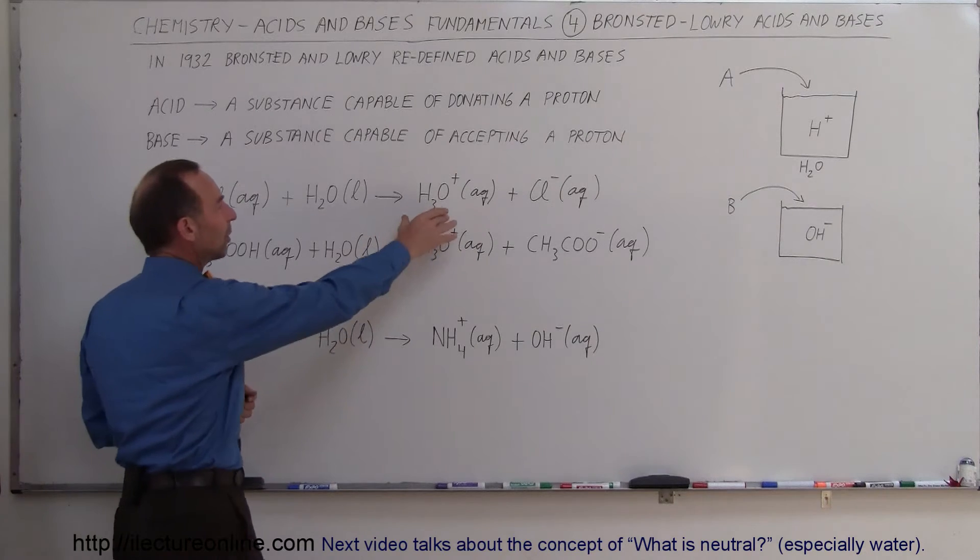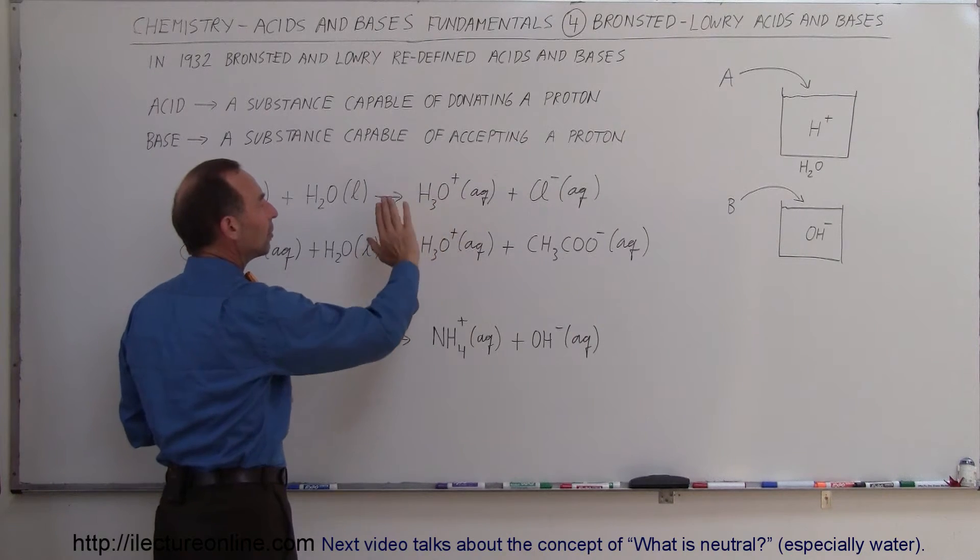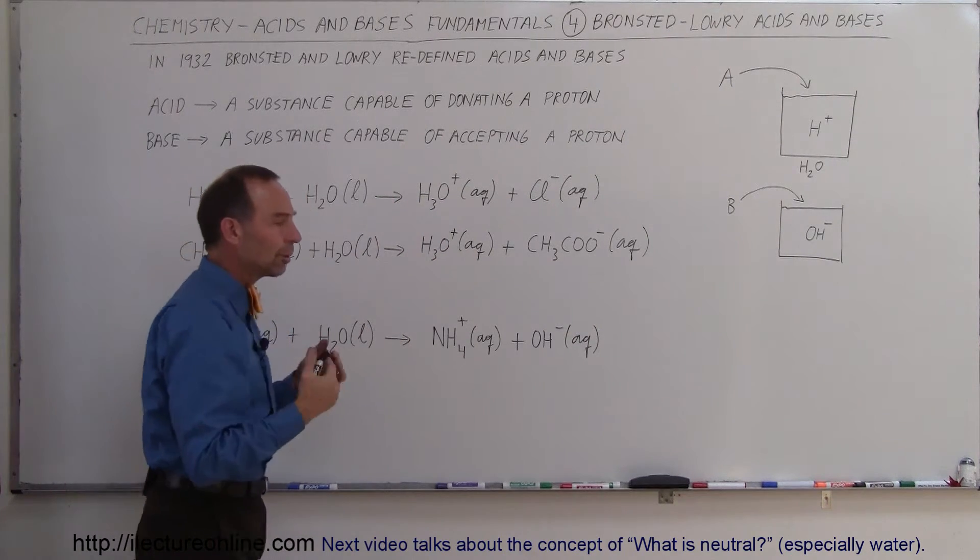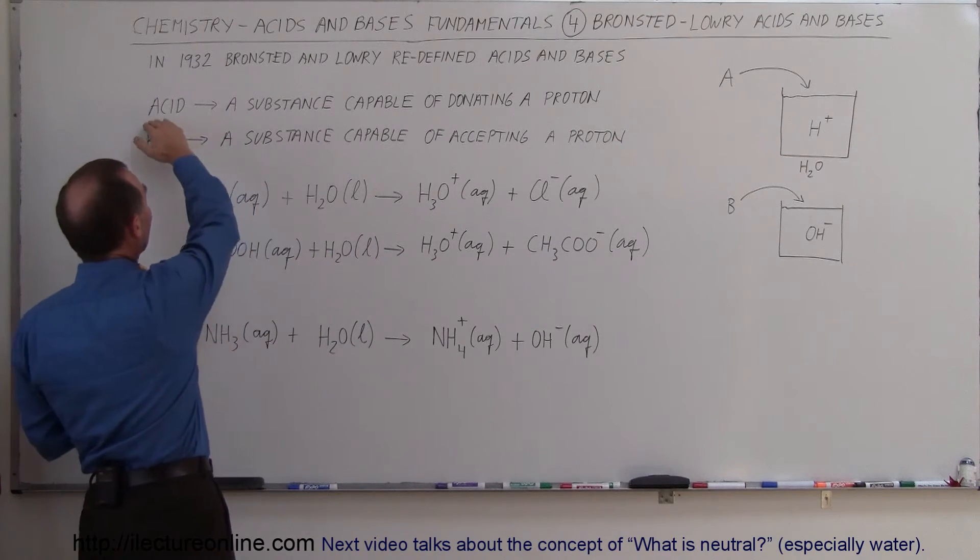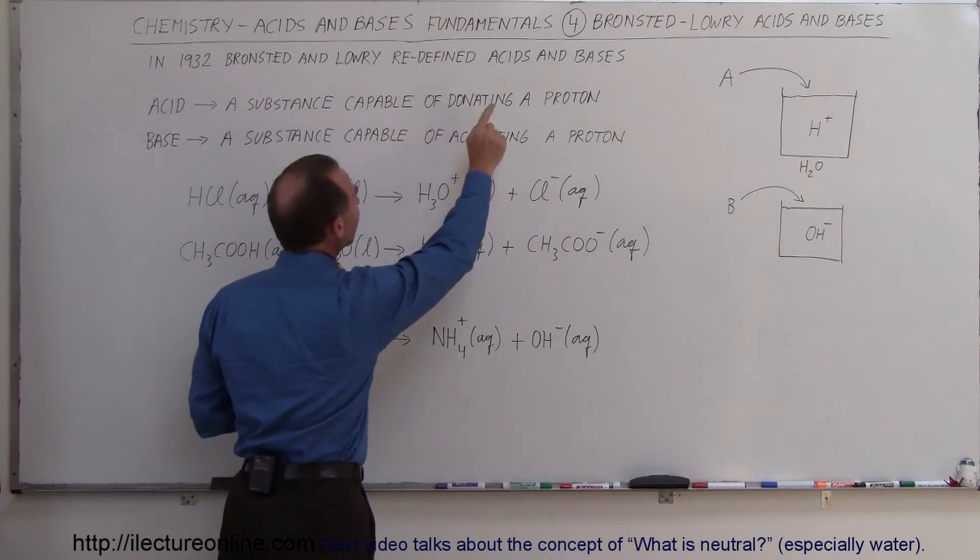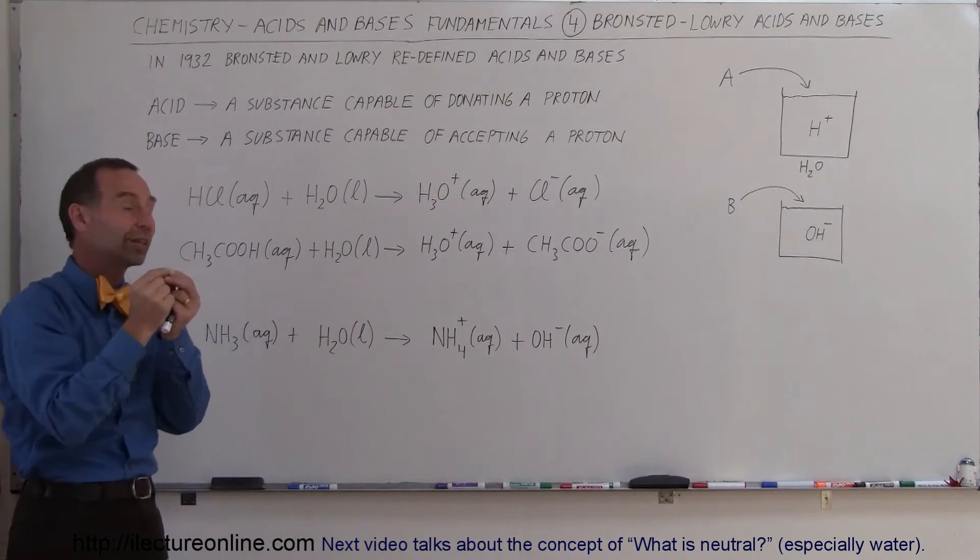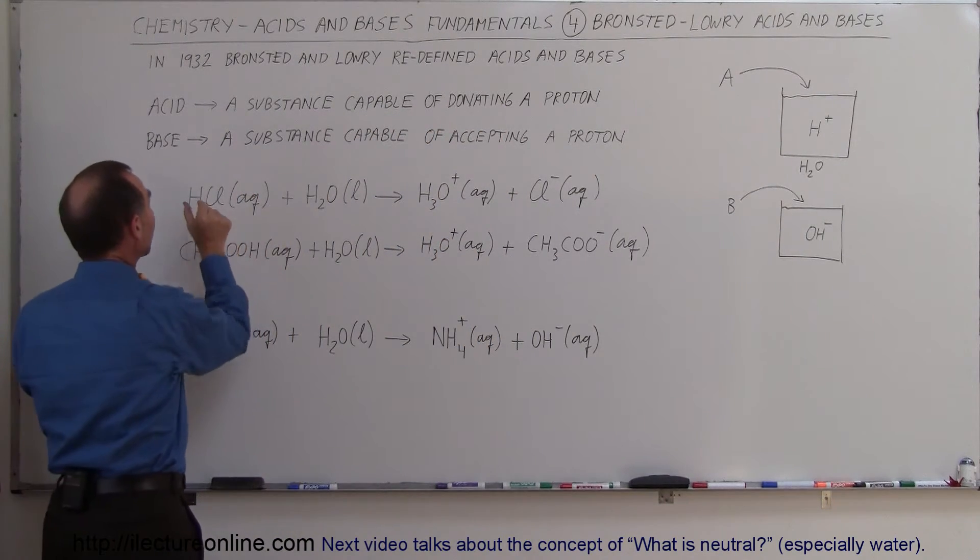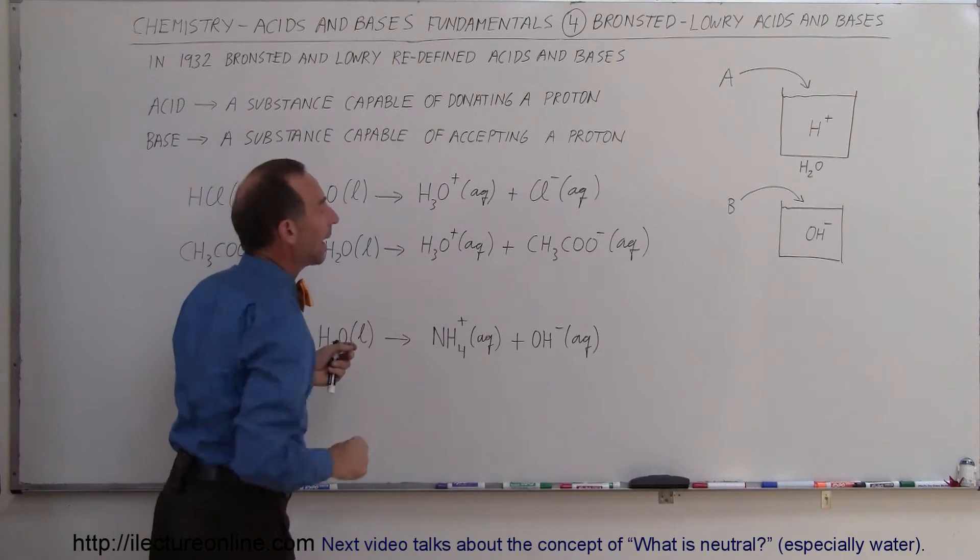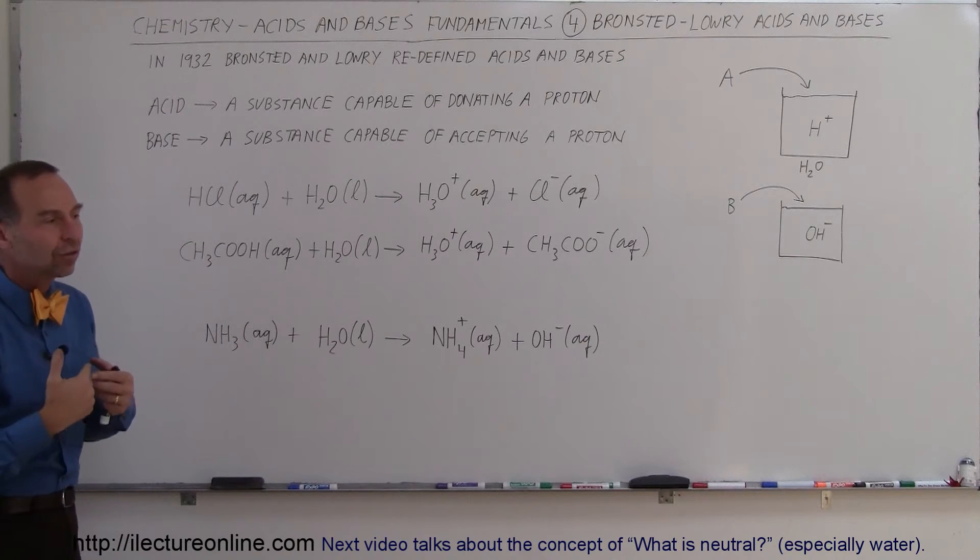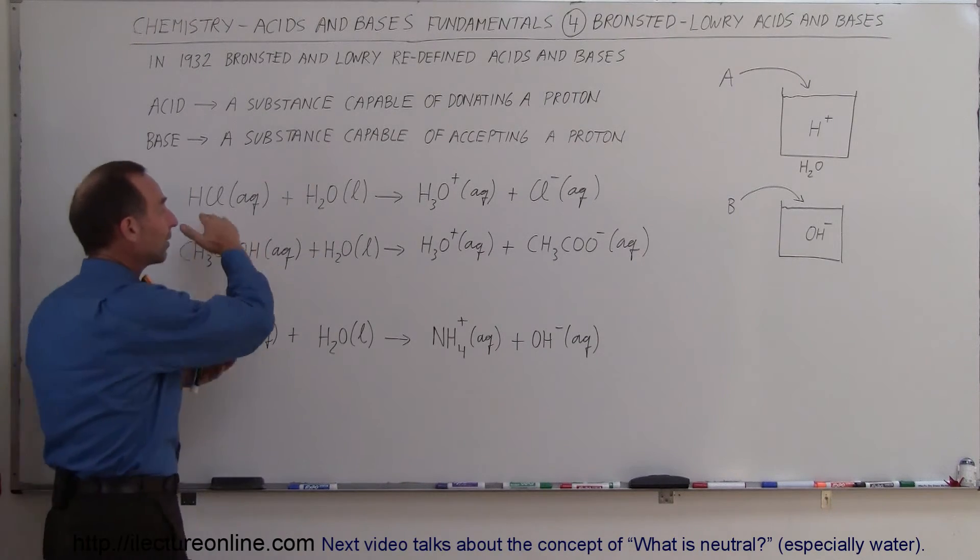Now we can also write H+ instead of H3O+, but the reason we write it with the hydronium ion is to indicate the definition that an acid is capable of donating a proton. Here we show physically that the proton is donated from the hydrochloric acid to the water to make hydronium ions. But it's just as well to write the same equation with H+, because that's really what we're doing—separating the hydrochloric acid into hydrogen ions and chloride ions.